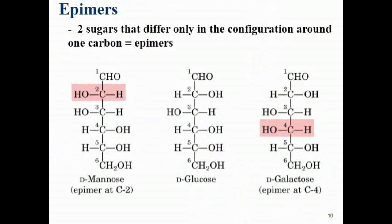Epimers are two stereoisomers that differ in configuration around only a single carbon. Glucose and mannose are epimers at carbon 2; glucose and galactose are epimers at carbon 4 — only that carbon differs between them. However, mannose and galactose are not epimers; they are simply stereoisomers, differing at more than one carbon.